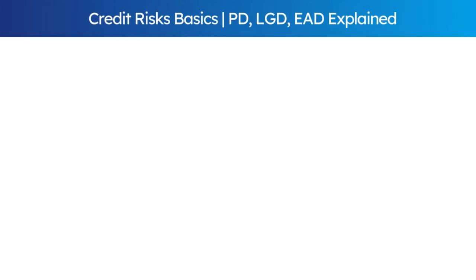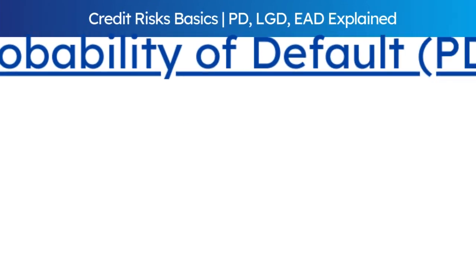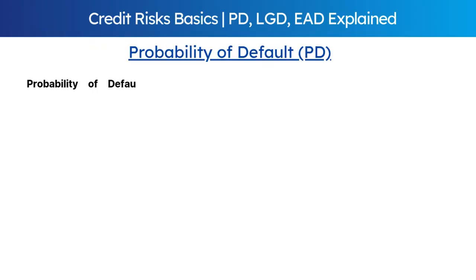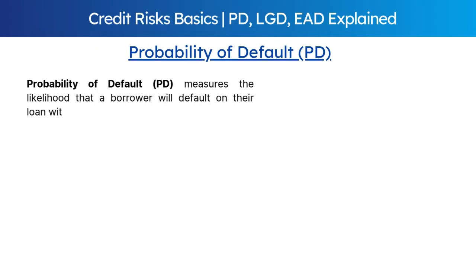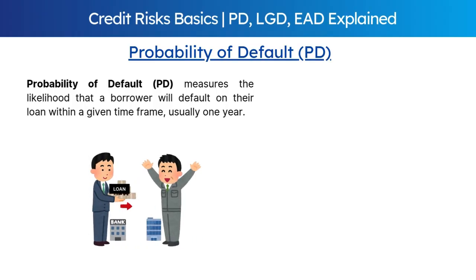The first component is probability of default. It measures the likelihood that a borrower will default on their loan within a given time frame, usually one year. It's typically expressed as a percentage. For example, if a bank assesses that a company has a 5% PD, it means there's a 5% chance that the company will default within a year.